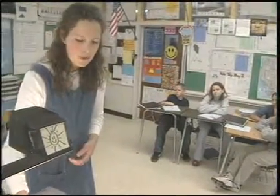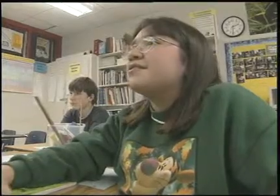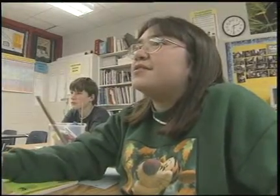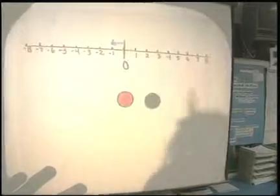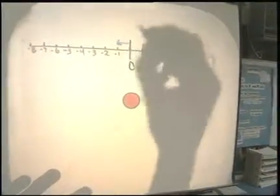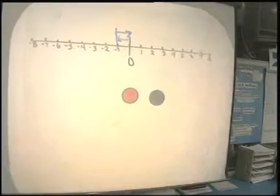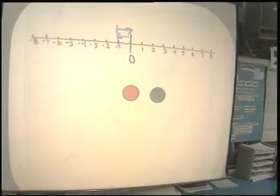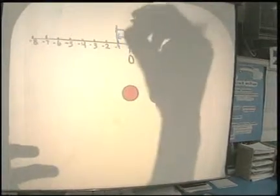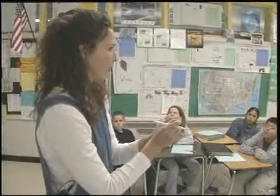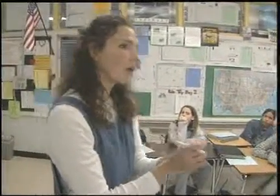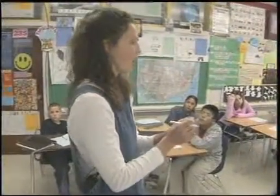Black chip, what would you assume represents? Positive 1. Good. The red one is negative 1, so I'm going to go negative 1 step. Stop there. The black one represents positive 1, so I'm going to turn around and go in the positive direction. Where do I end up, class? Zero. When we have a negative 1 and a positive 1 together and end up at zero, we're going to call that a zero pair.